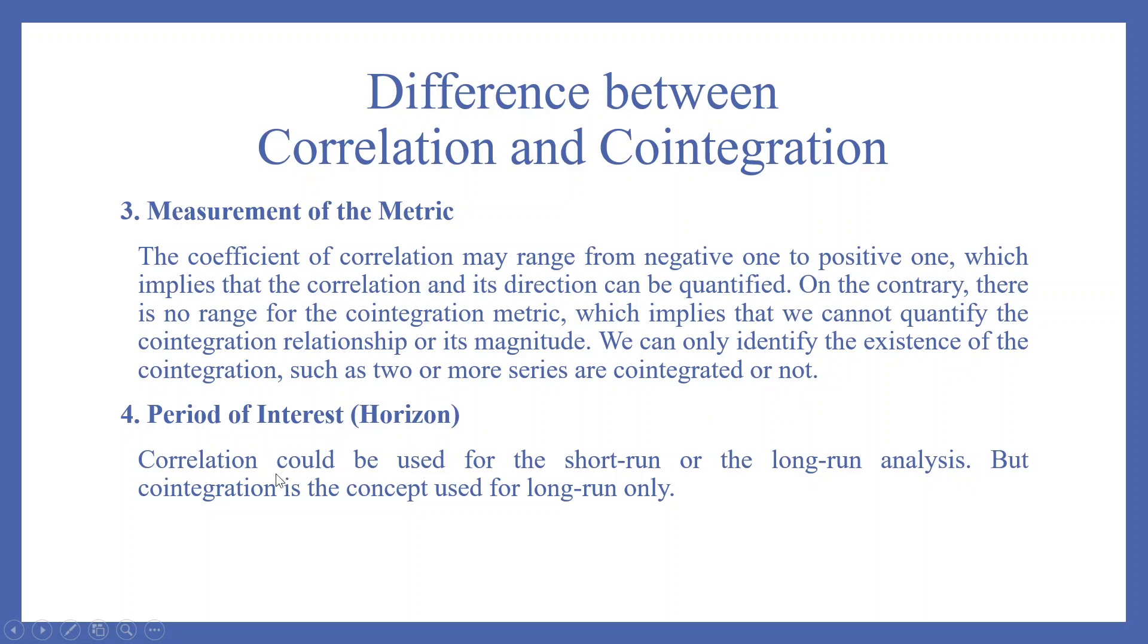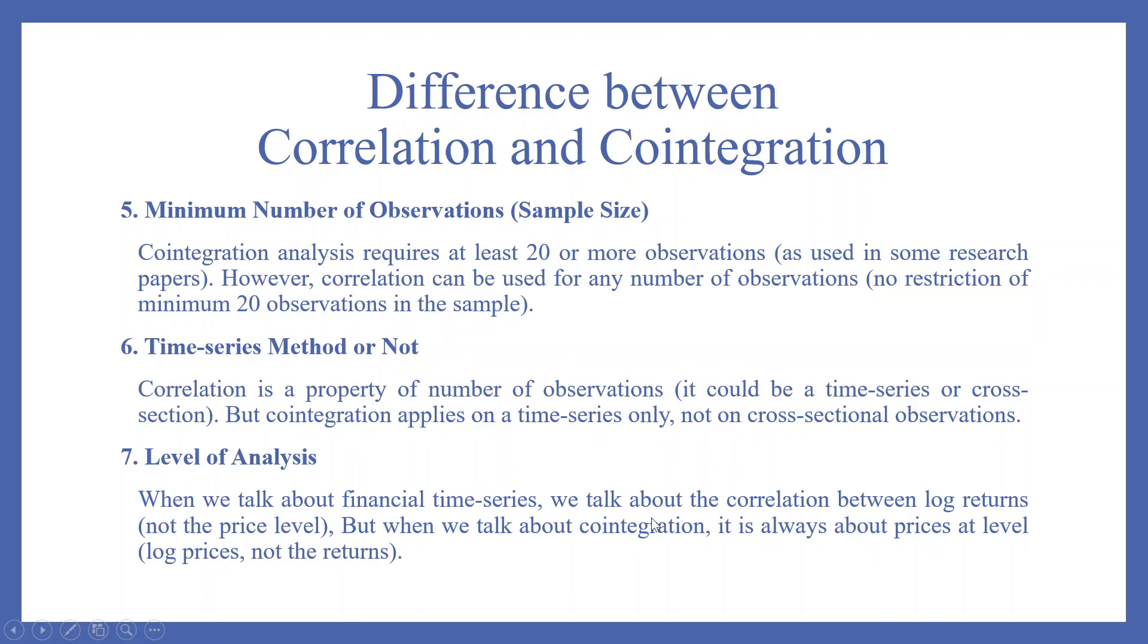Period of interest. Correlation should be used for the short run or the long run analysis, but cointegration is the concept used for the long run only. Minimum number of observations. Cointegration analysis requires at least 20 or more observations, as used in some research papers. However, correlation can be used for any number of observations, no restriction of minimum 20 observations in the sample.